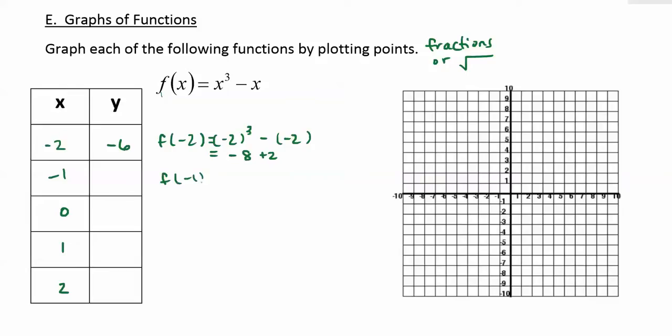Next we get f of negative 1 is negative 1 cubed minus negative 1. So that equals negative 1 plus 1 or 0. f of 0 is 0 cubed minus 0 and that's just 0. f of 1 is 1 cubed minus 1 which becomes 1 minus 1 or 0. And f of 2 is 2 cubed minus 2, and that is going to be 8 minus 2 or 6.